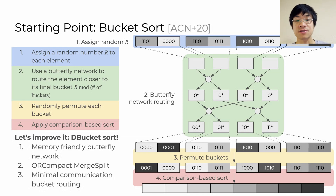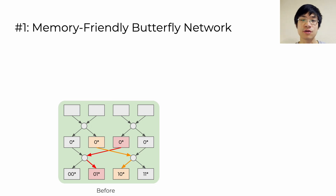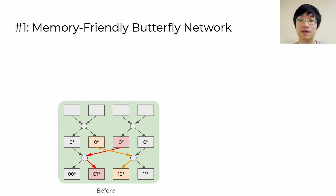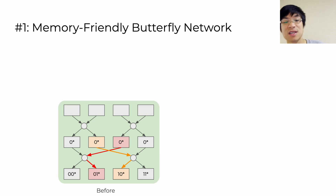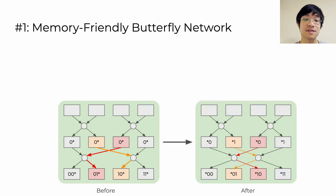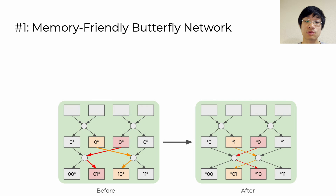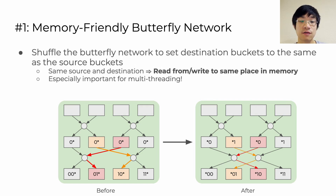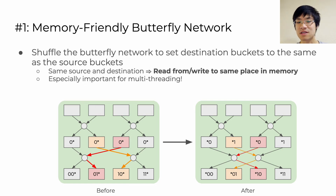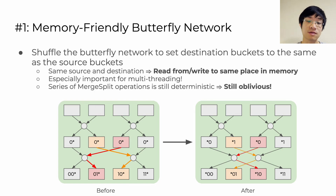There are three optimizations we implement and evaluate to improve the scalability of bucket sort. The first is to shuffle the arrows on the original butterfly network slightly. In the original arrangement, we end up writing pairs of buckets to locations that are actually different from where they started. If instead we route buckets through the butterfly network such that the two destination buckets are the same as the two source buckets, we can minimize memory thrashing since we write back to the same locations we read from. Minimizing cache line contention between threads is incredibly important, so this is especially important for multi-threaded scalability, and because this pattern of operations is still deterministic, this modification preserves the obliviousness of bucket sort.